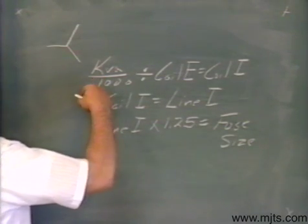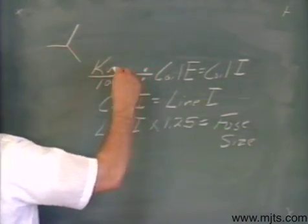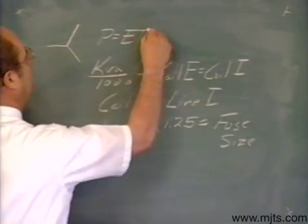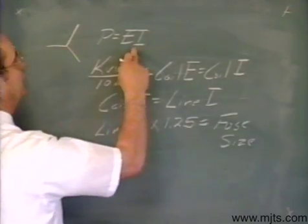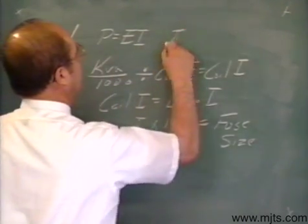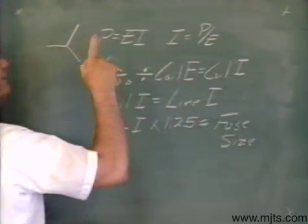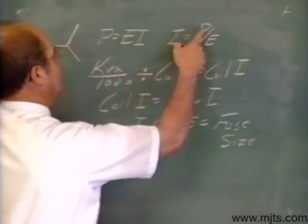Now what we're using is a basic power formula. The basic power formula P is equal to E times I. We're going to isolate I. I is going to be equal to P divided by E.